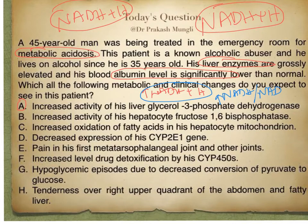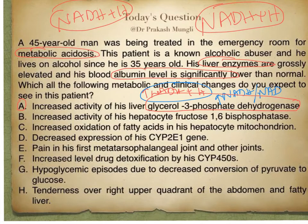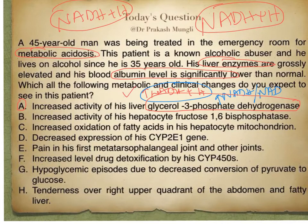Keeping that in mind, let's go to Choice A: increased activity of liver glycerol-3-phosphate dehydrogenase. Glycerol-3-phosphate dehydrogenase catalyzes a reversible reaction where dihydroxyacetone phosphate (DHAP) is converted to glycerol-3-phosphate. In this conversion, NADH + H⁺ is used and NAD⁺ is released. Since the reaction is reversible, it depends on the availability of NADH and NAD⁺.